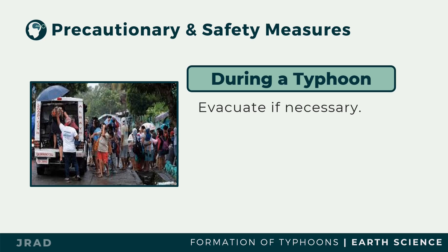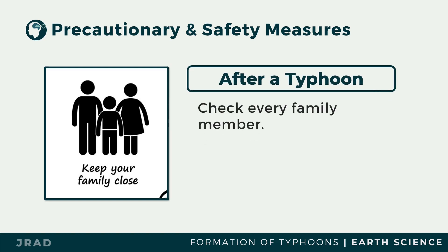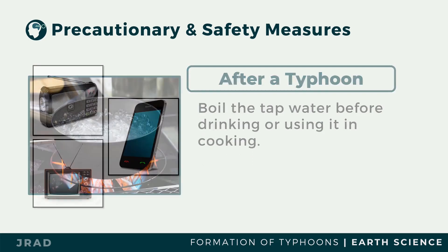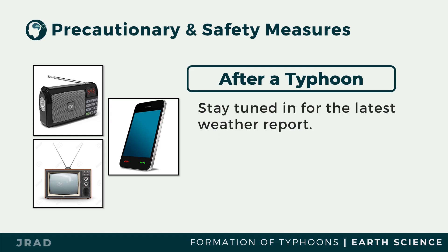After a typhoon, check every family member and make sure the house is stable. Wait for the government agency's announcement that it is safe to return. Boil tap water before drinking or using it for cooking. Stay tuned for the latest weather reports. The National Disaster Risk Reduction Management Council, or NDRRMC, is a government agency mandated to provide information and implement plans to help people prepare and respond to natural calamities. The NDRRMC disseminates information through several means, including SMS flood warning messages to people in affected areas.